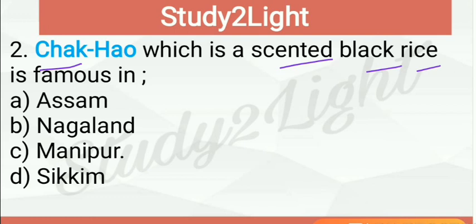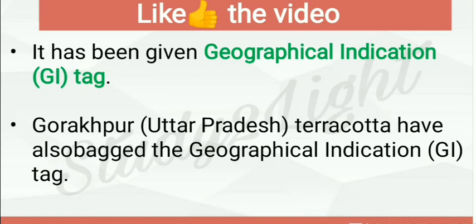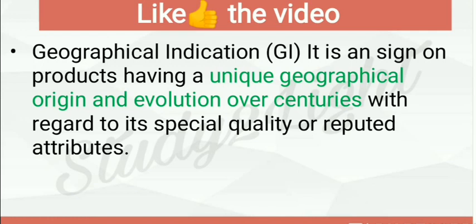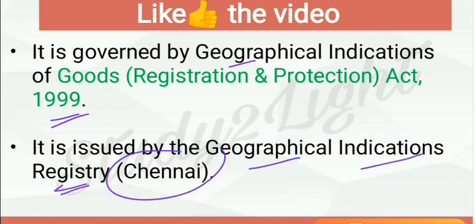Next question: Chakhao, which is a scented black rice, is famous in — so Chakhao is famous in Manipur, so C is the right answer. Chakhao is in news because it has been given a Geographical Indication tag. Other products like Kauragpur terracotta, which belongs to UP, have also been given the GI tag. GI tag is governed by the Geographical Indication of Goods Registration and Protection Act 1999, and it is issued by the Geographical Indication Registry based in Chennai.